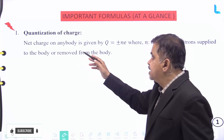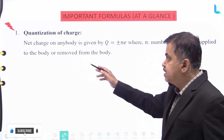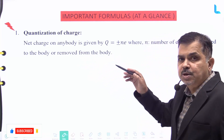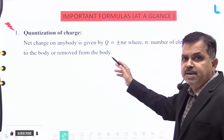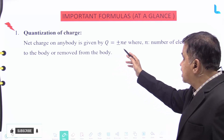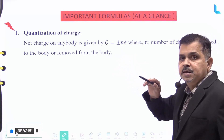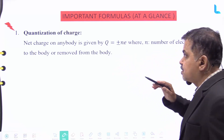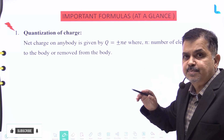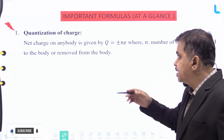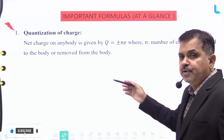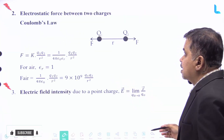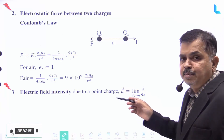First, at a glance, the quantization of charge. The net charge on any body is given by Q equal to plus or minus n into e, where n stands for the number of electrons supplied to the body or removed from the body.